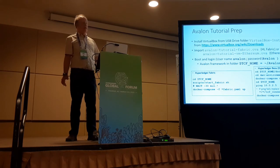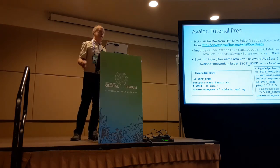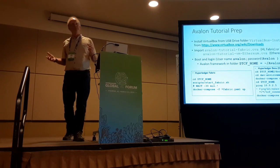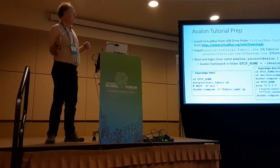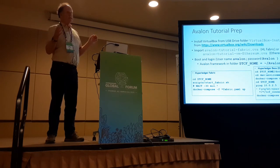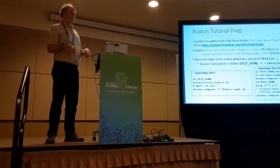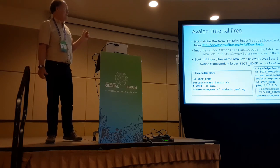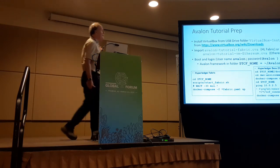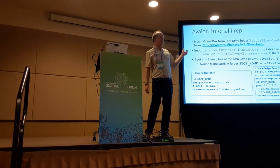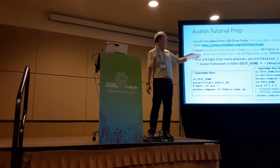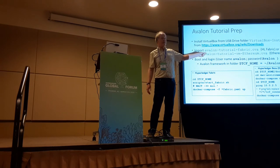We're going to have a pretty aggressive tutorial — we're going to have everyone here try to develop applications, which I don't know how successful that will be, but we handed out these USB keys. What you want to do right now, if you want to try this — or you could just listen — you need to have VirtualBox installed. That's on the USB key or you can download it from the internet. You need to import one of two images: the first one is Fabric, the second one is Ethereum. You do one or the other, not both.